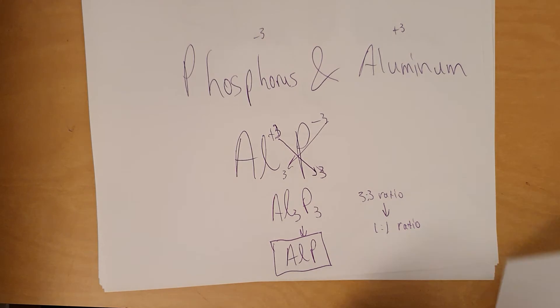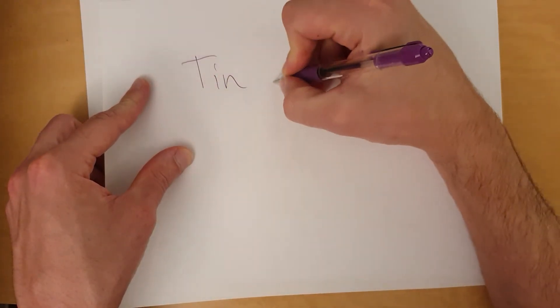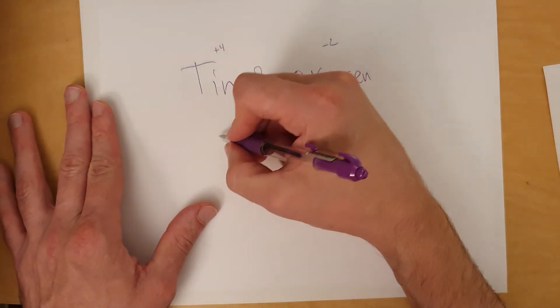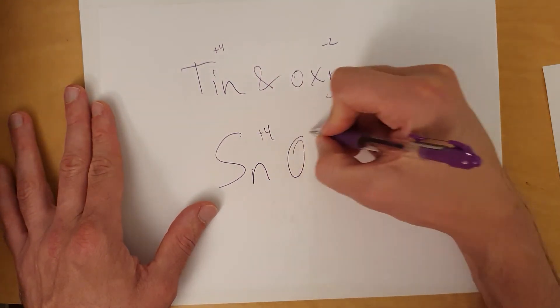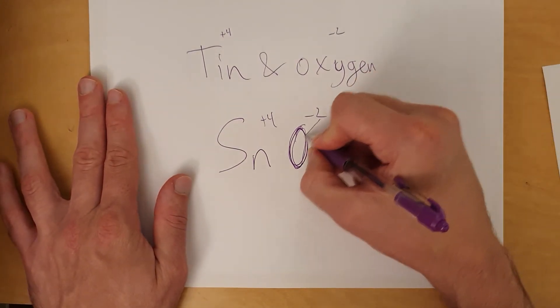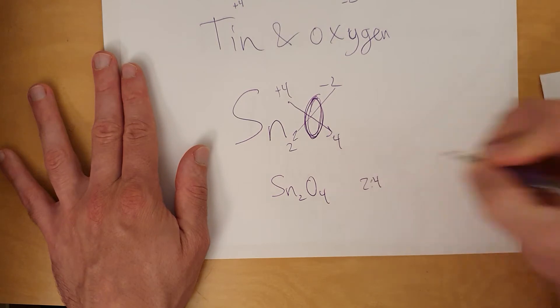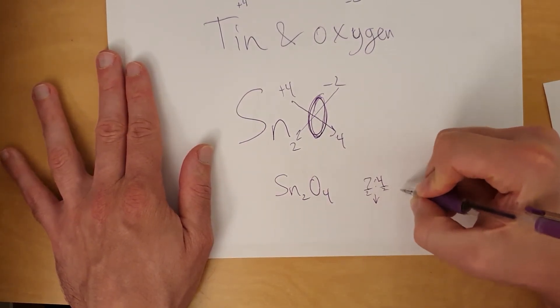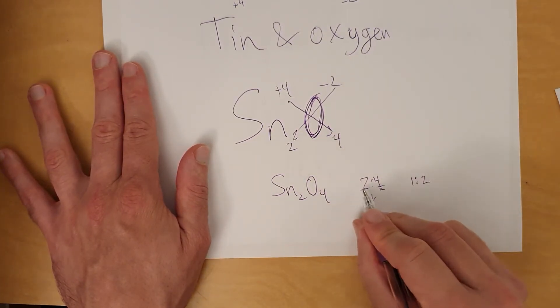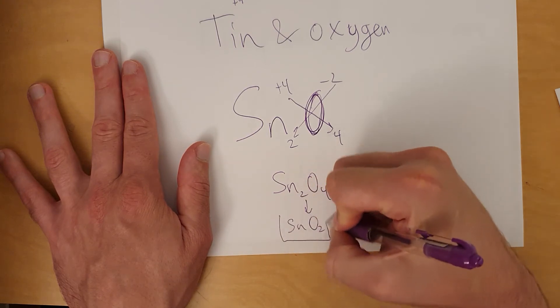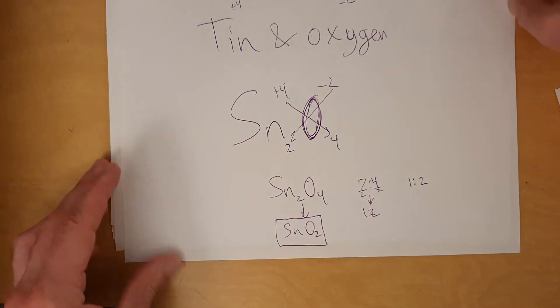That includes other types of ratios. Imagine you had tin and oxygen. Tin is variable charge — let's do a case where tin happens to be a plus four, and oxygen is a minus two. So tin is Sn plus four, oxygen is minus two. Switch the charges: put this two here — two tins — put this four here — four oxygens. That's Sn₂O₄, a two-to-four ratio. We have to reduce that: divided by two, divided by two. Two divided by two is one, four divided by two is two. So this reduces to a one-to-two ratio: one tin, two oxygens — SnO₂.